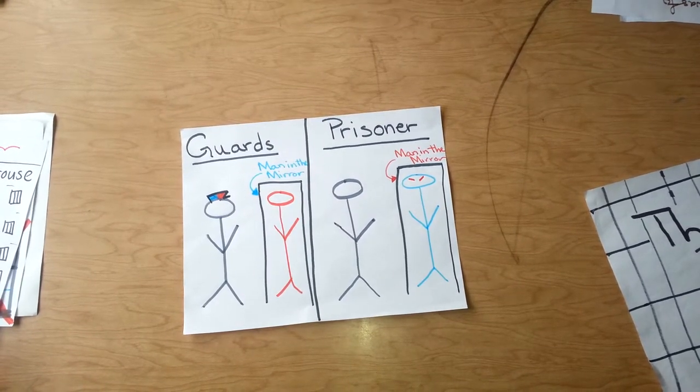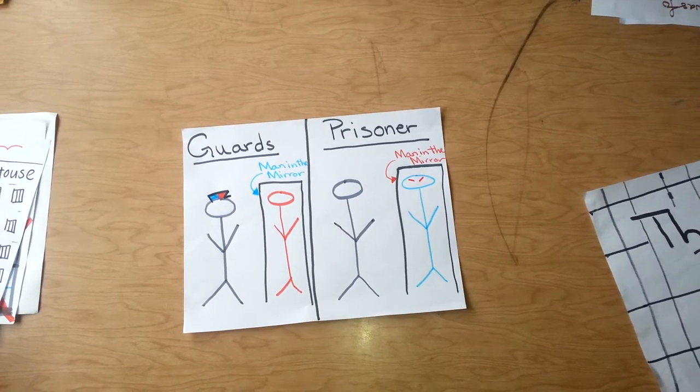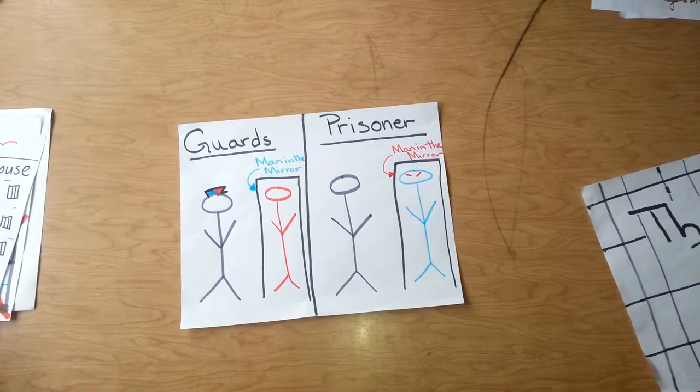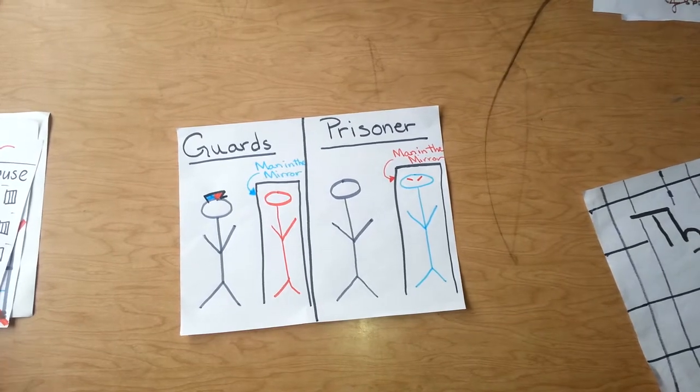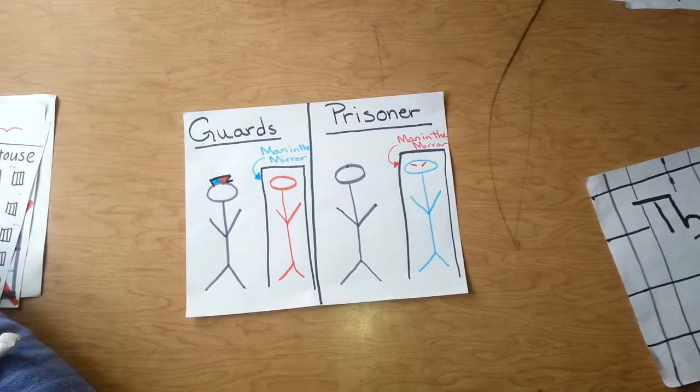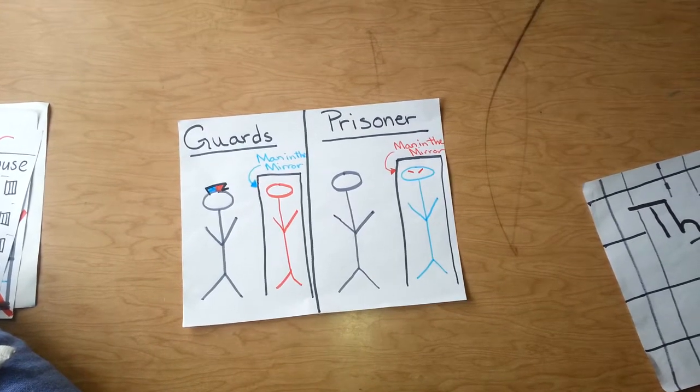You can see on the left that the guard was the same as the prisoner on the right, but they also saw a different man in the mirror. The prisoner on the right saw a person who was supposed to be rebellious and just break all the rules and fulfill the role of a prisoner.